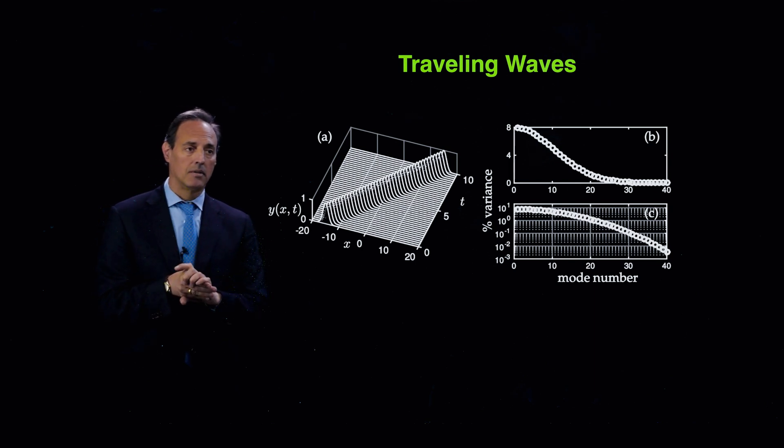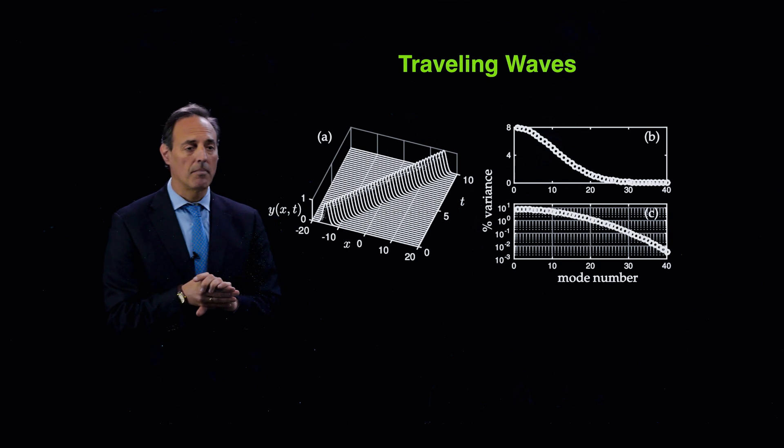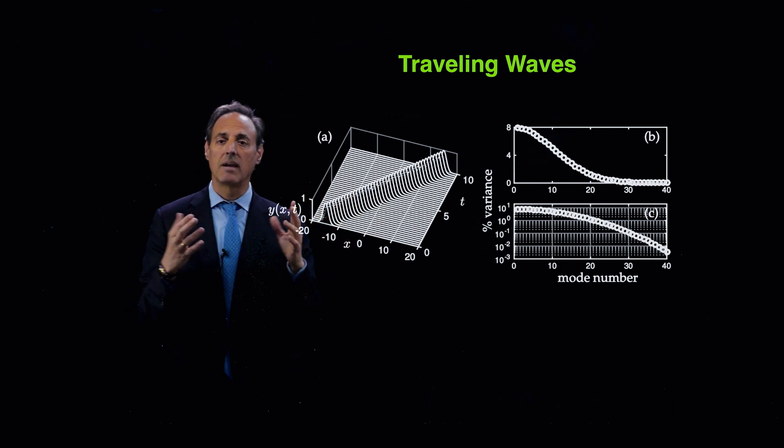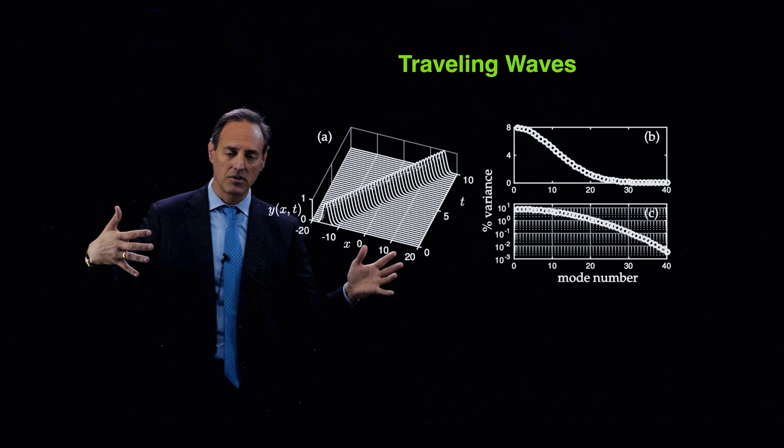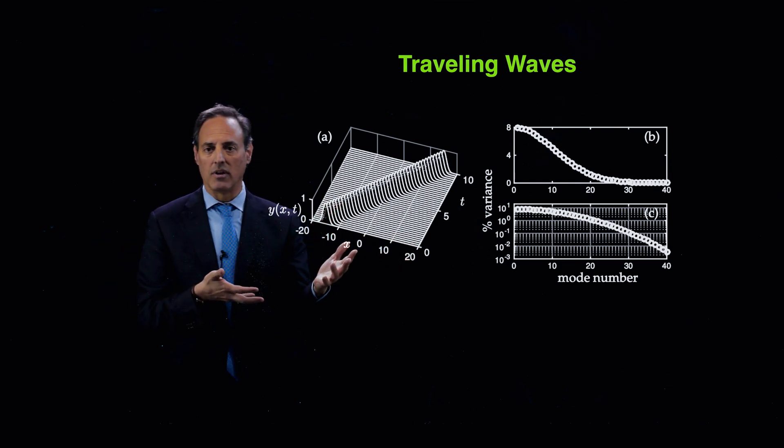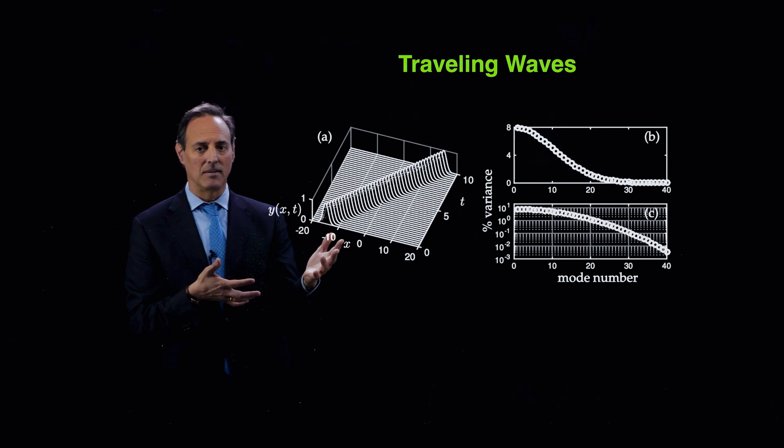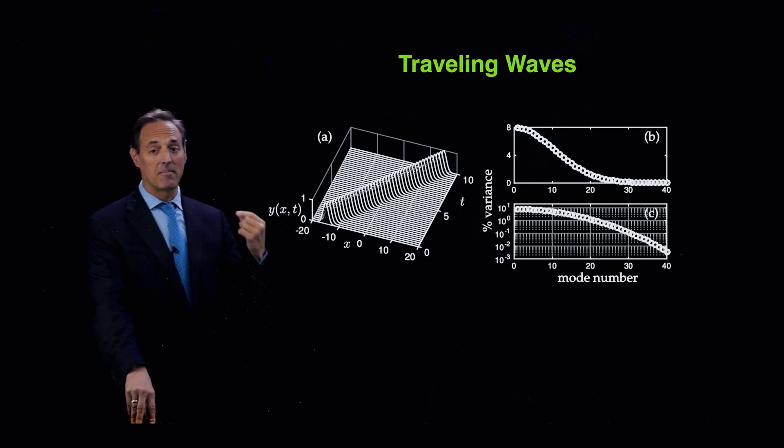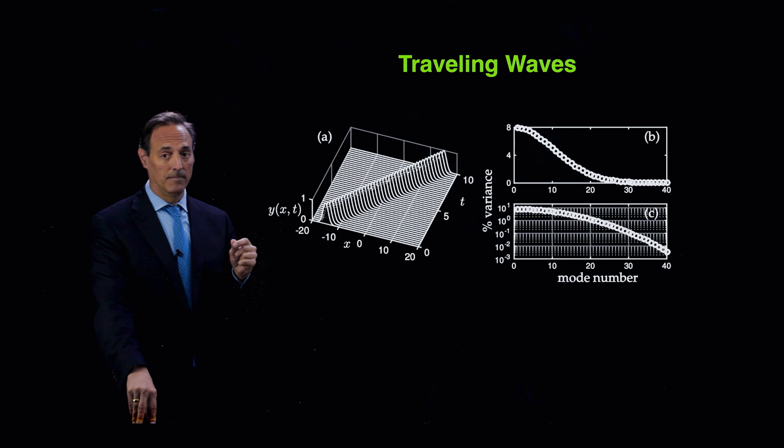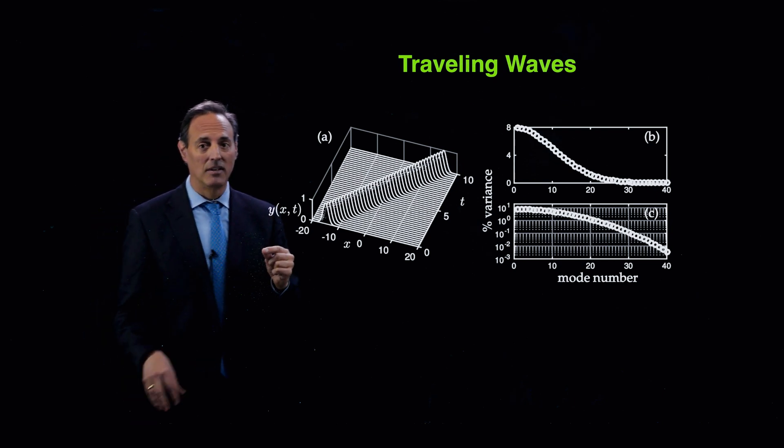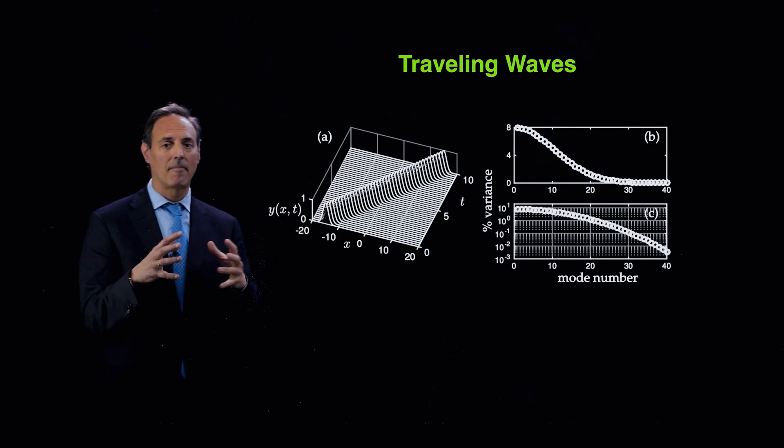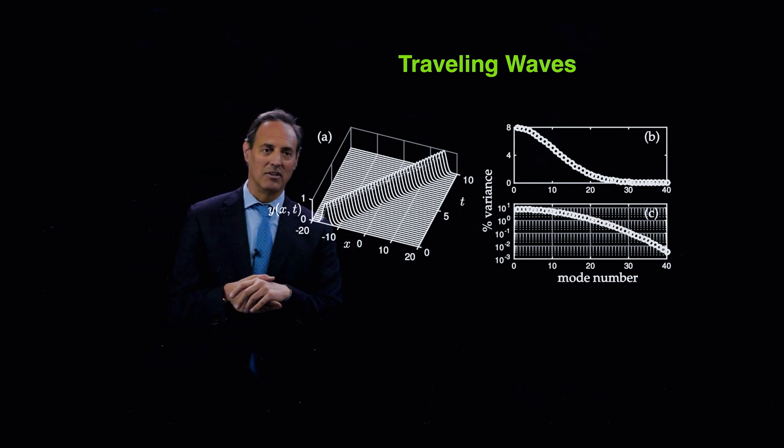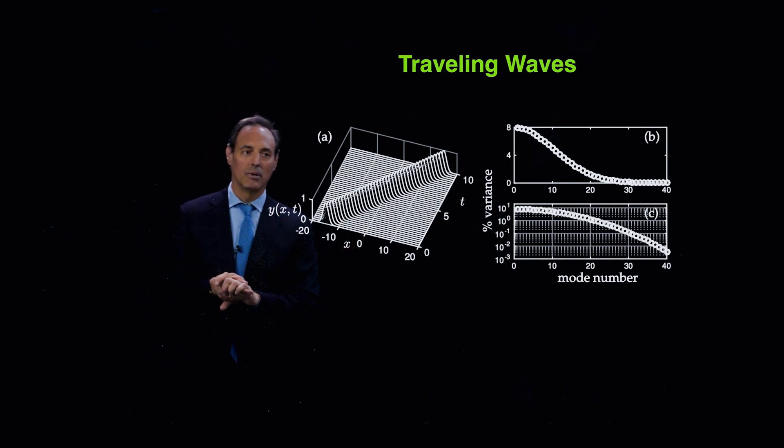If I take this data matrix, run it through an SVD, here's what the singular value spectrum looks like. Here's how many modes I would need to represent that. Somewhere around 30. This is not a 30 degree of freedom system. It's like one. It's just that I have the wrong coordinate system. In other words, the SVD is not capable of handling this translational invariance. By the way, here it is on a log plot. So you can see it's just this very slow rollover of the singular value spectrum, creating a real problem for this.